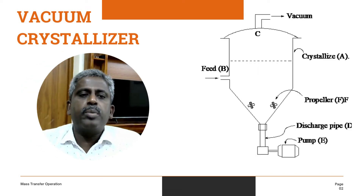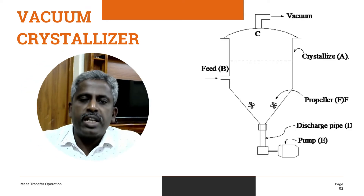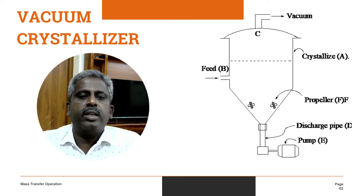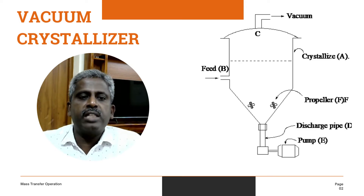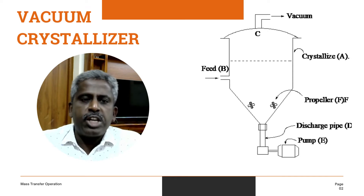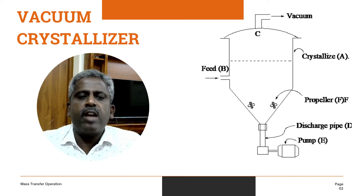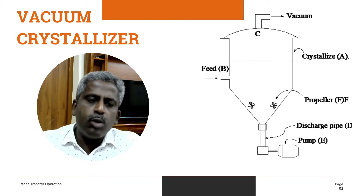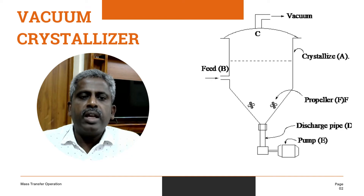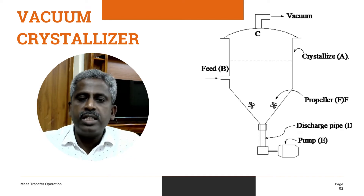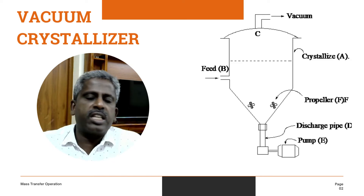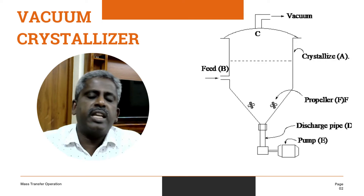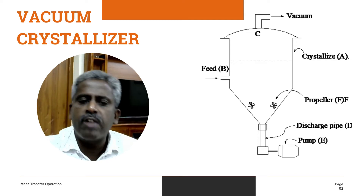Now, the principle of the vacuum crystallizer: these vacuum crystallizers work below the boiling point — that is, under vacuum a liquid boils. If a warm saturated solution is introduced into a vessel in which a vacuum is maintained, and the feed temperature is above the reduced boiling point of the solution, then the solution introduced must flash — meaning sudden evaporation — and be cooled due to adiabatic evaporation, taking latent heat from the solution. This cooling causes supersaturation and thus crystallization. Evaporation will increase the yield of the process. Vacuum crystallizers are often operated continuously, but they can also be operated batchwise.